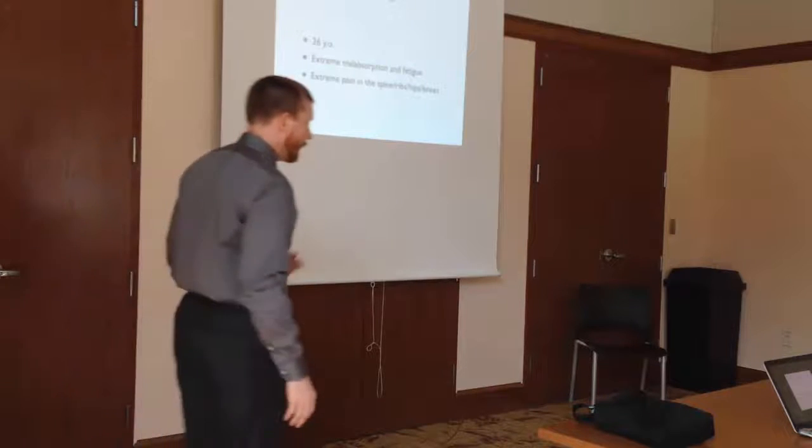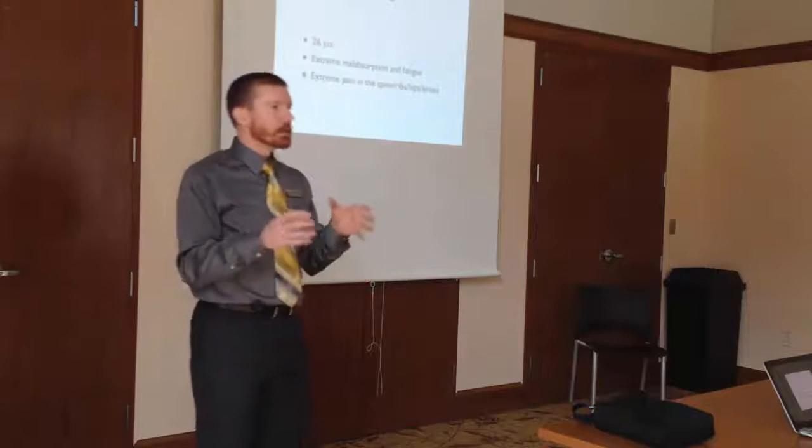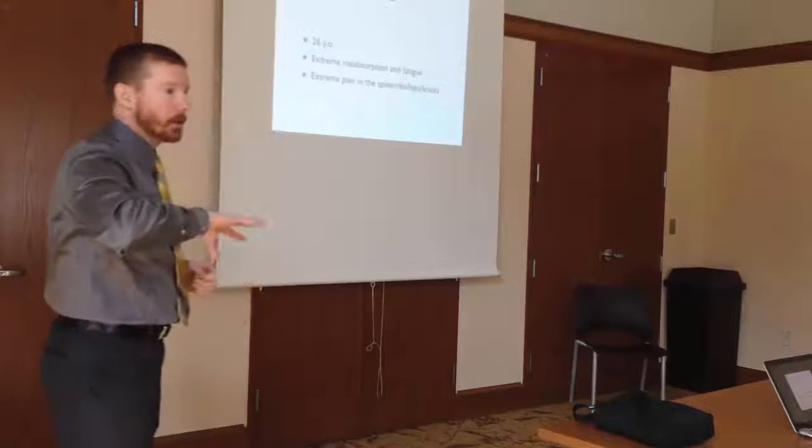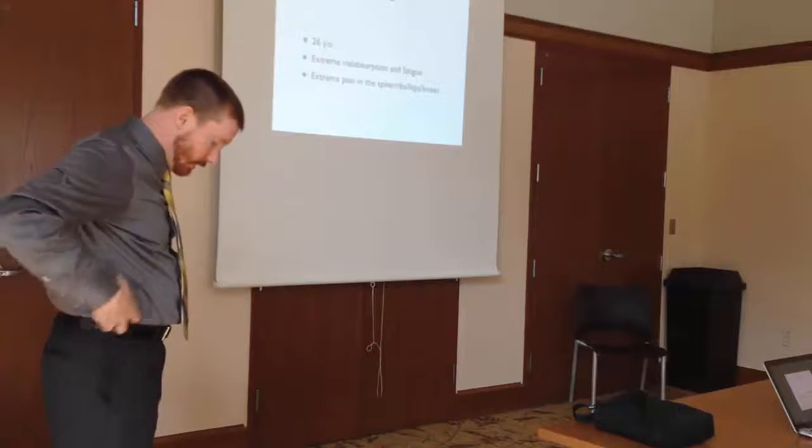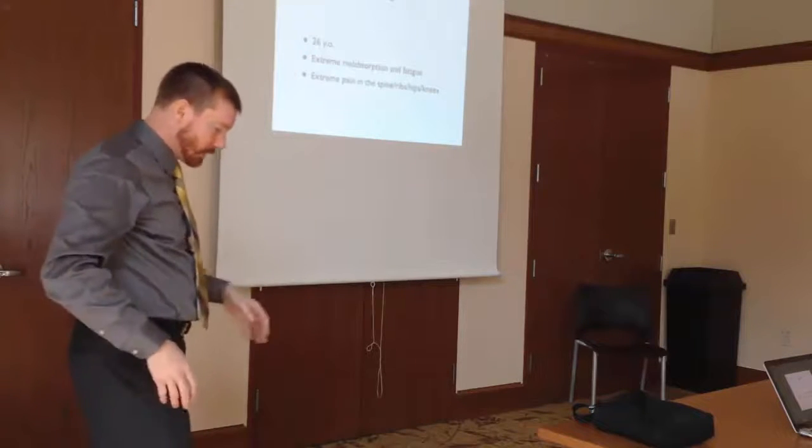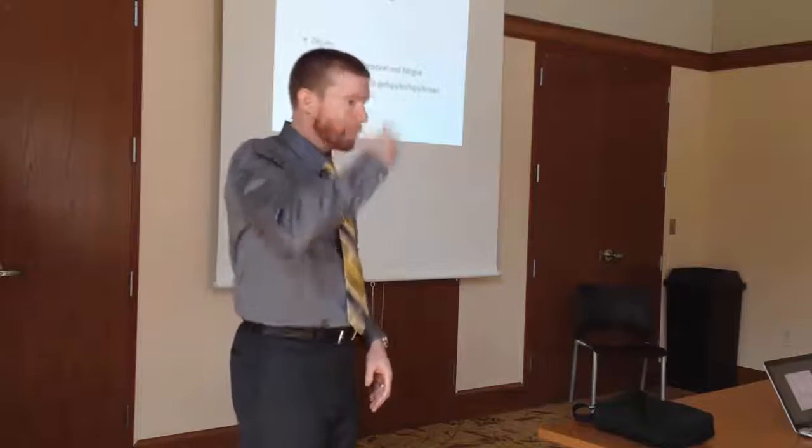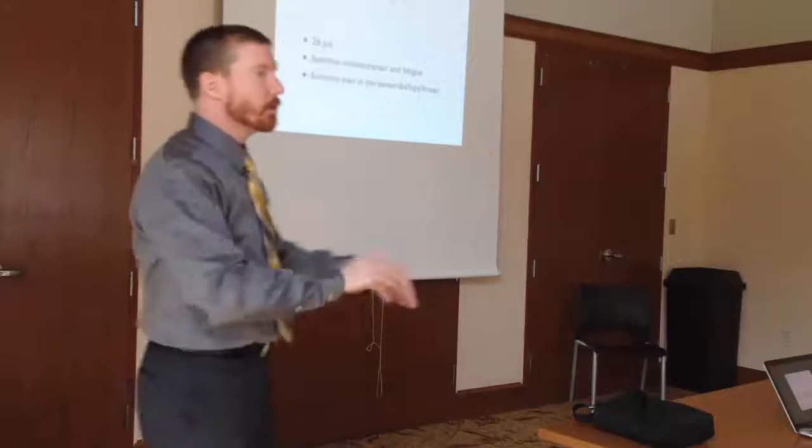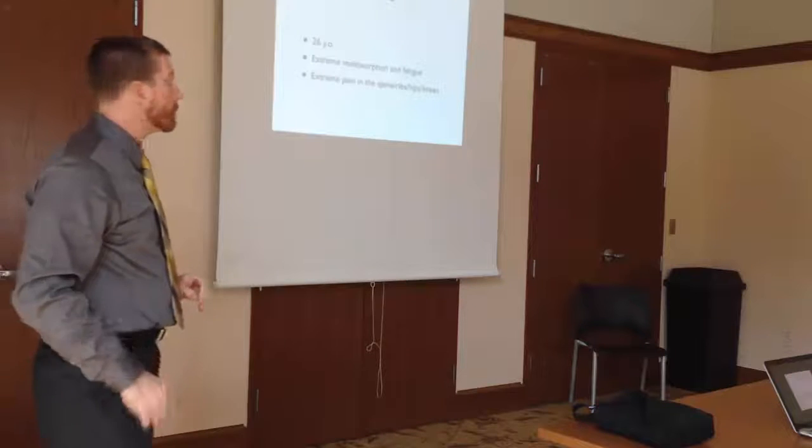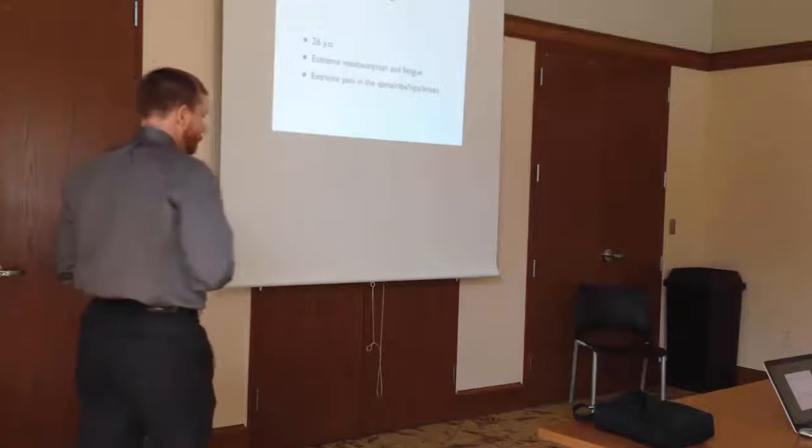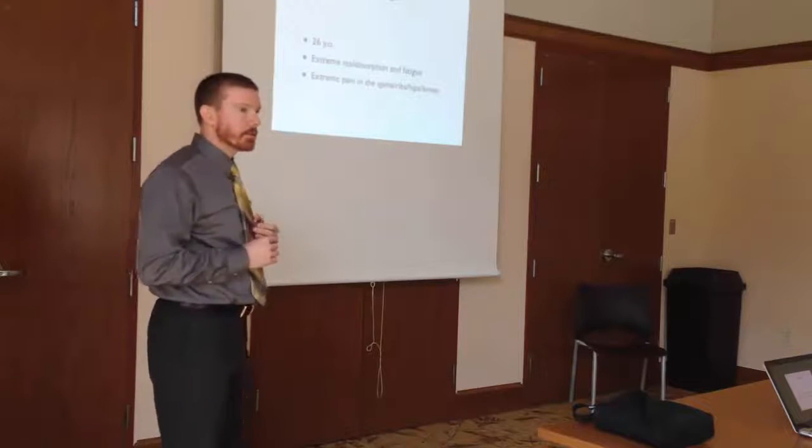Ankylosing spondylitis is different because it's mainly inflammation of the entire spine. It can attack the whole spine, the ribs, and mainly the hips, what they call the axial skeleton right in the center, as opposed to the hands and feet of rheumatoid arthritis. So the diagnosis was eventually ankylosing spondylitis in this individual.